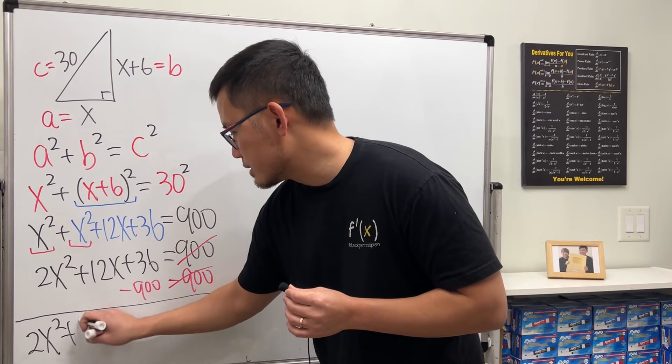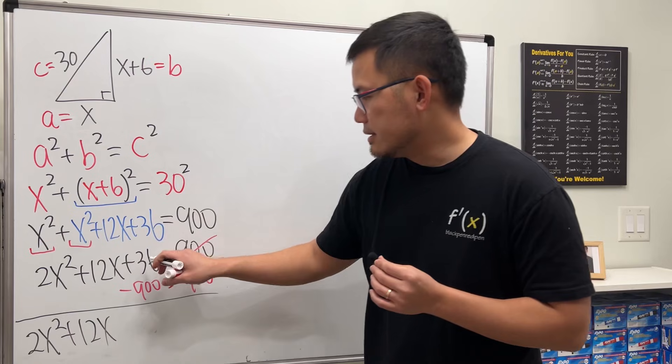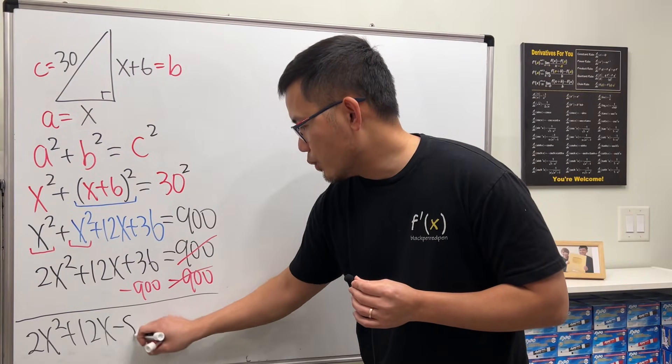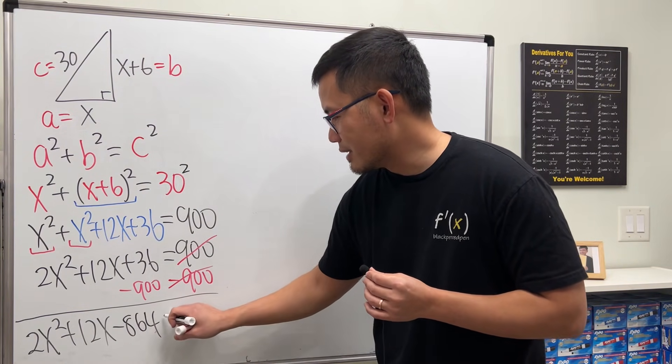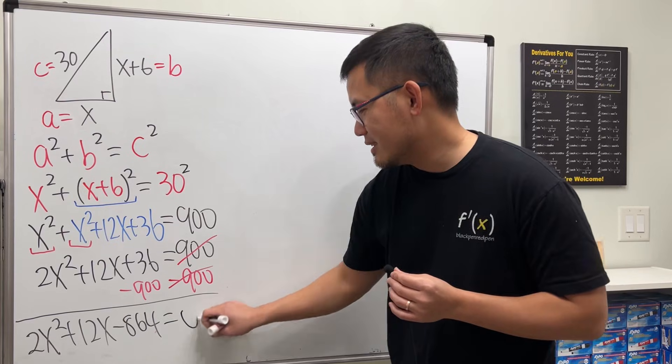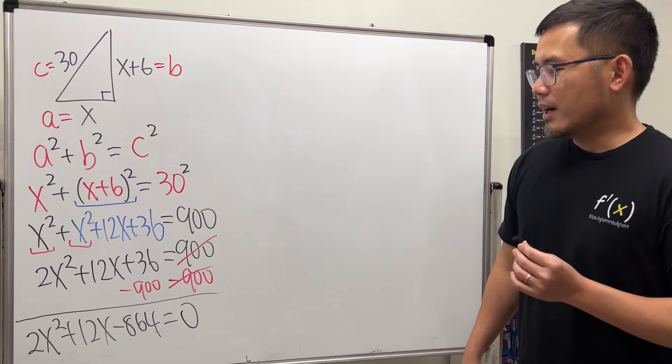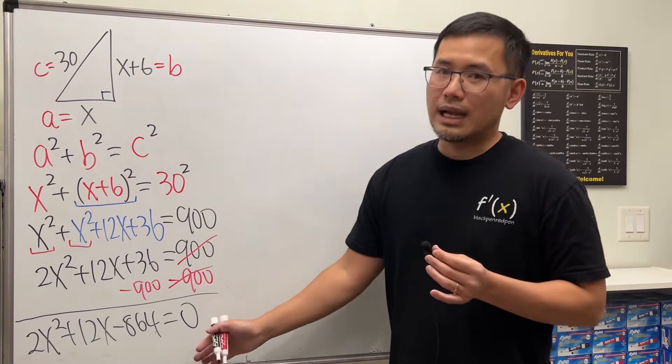And we are looking at the equation here, 2x² + 12x. And 36 - 900, work that out. Maybe you can use a calculator on the test. If so, that's the answer, -864. And now the question is, how do we solve this?